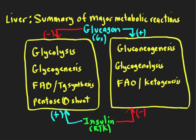The opposite is true in the fasting state. When you want to be making glucose, breaking glycogen down, oxidizing fatty acids, and making ketones, you want glycolysis off, you want glycogen synthesis off, you shouldn't be making fatty acids or triglycerides, and the pentose phosphate shunt will be off too.